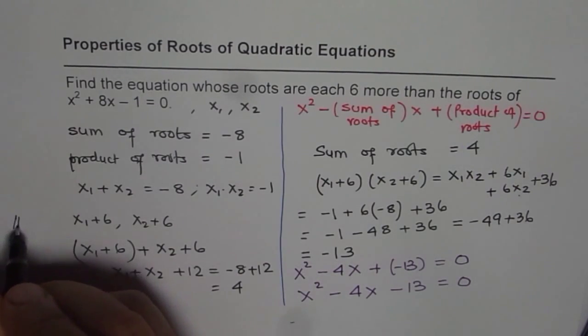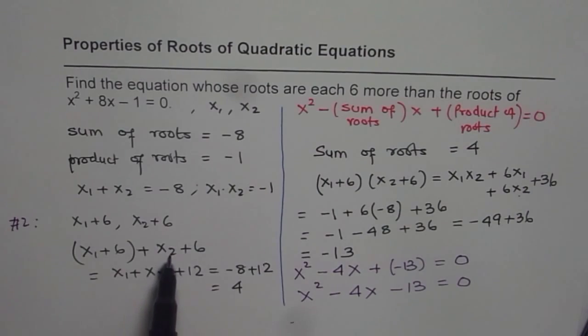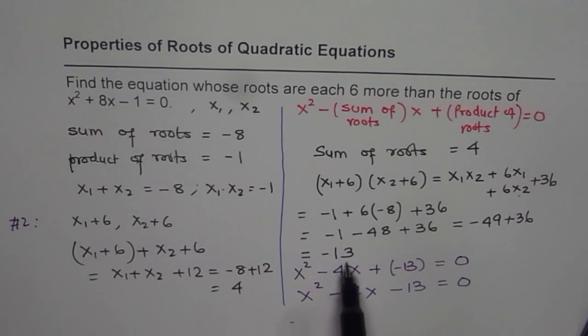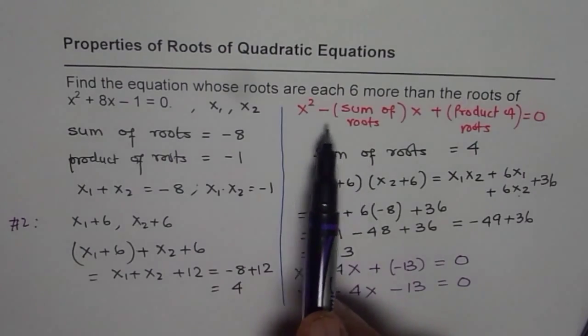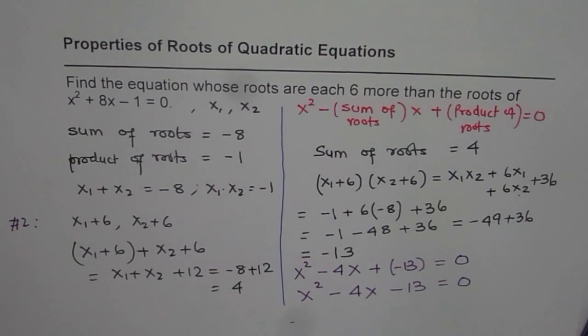This is equation number 2. For that we will find the sum and the product. When you find the sum, you get 4. When you find the product, you get -13. Substitute in the formula, x² - (sum of roots)×x + (product of roots) = 0, and get your answer.